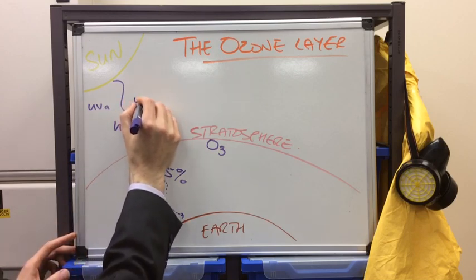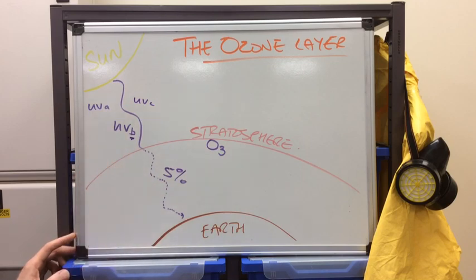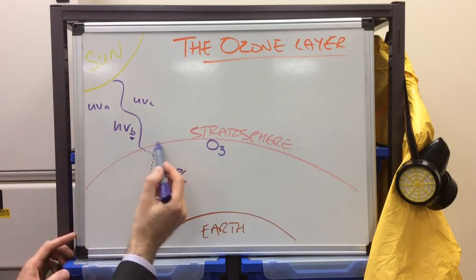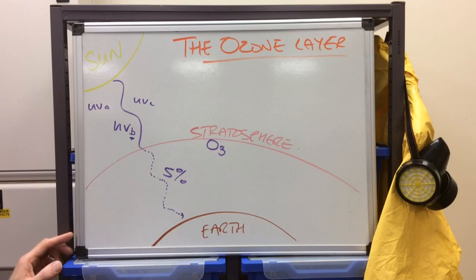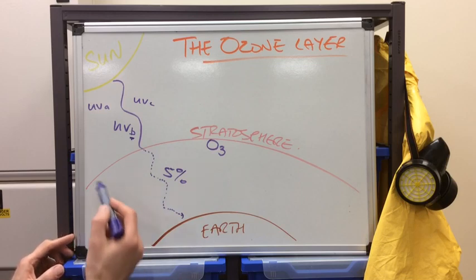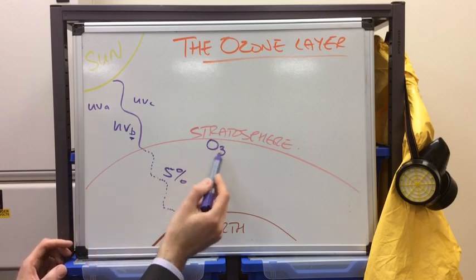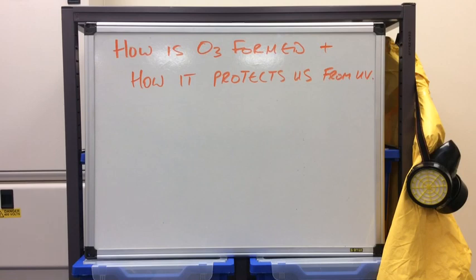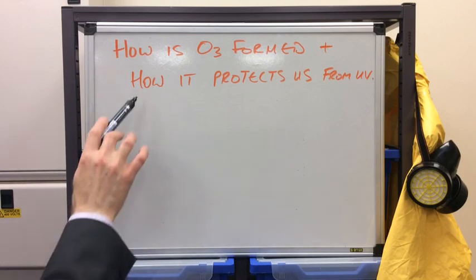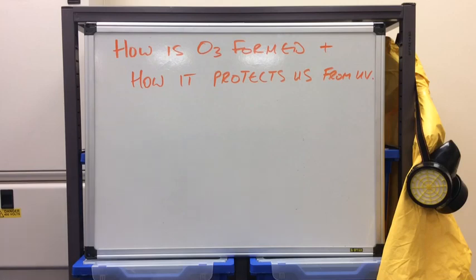UVC has the shortest wavelength. But luckily the ozone layer filters out all of UVC. So that's not going to cause us any problems. Provided that we don't mess this ozone layer up. Obviously the problem is we are. So we're going to look at how ozone is formed now and also how it protects us from UV.